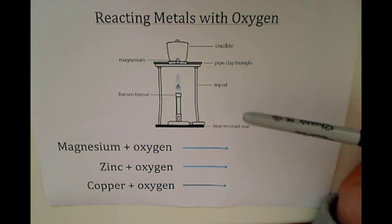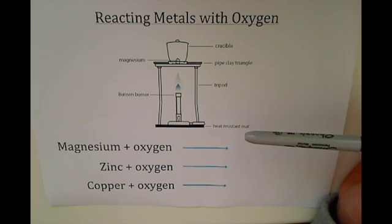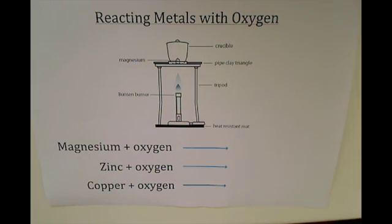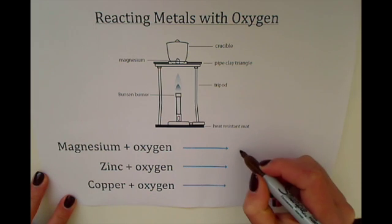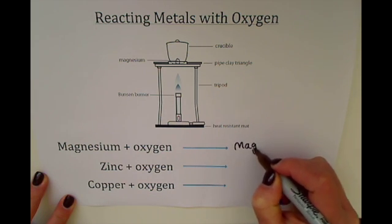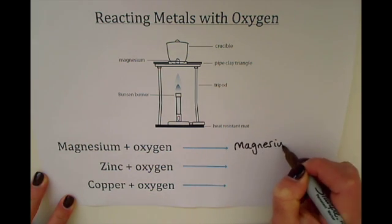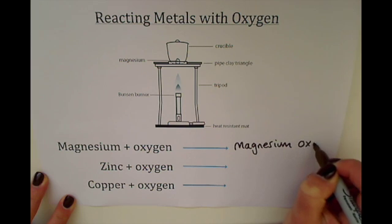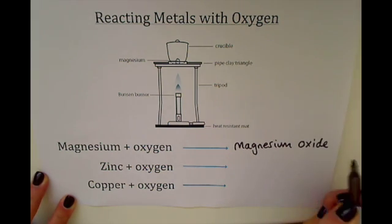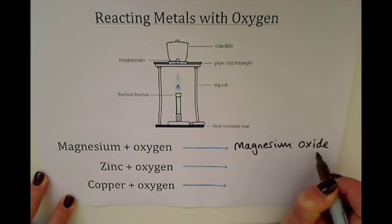The magnesium reacts with oxygen to make something called magnesium oxide. We can write word equations for these reactions. For example, here we've got magnesium plus oxygen makes magnesium oxide. All you do is change the last ending of the compound to 'ide'.